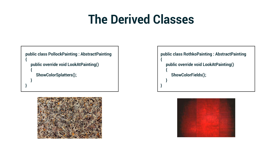What's important is that the two implementations of LookAtPainting are different. So what we now have is a system where we can say we just want to do something with an abstract painting — look at a painting — and not actually care what it's going to look like. I could take a PollockPainting, treat it as an AbstractPainting, call LookAtPainting, and it's going to call ShowColorSplatters. Or I could take a RothkoPainting, say that's an abstract painting, look at it, and it's going to show color fields.